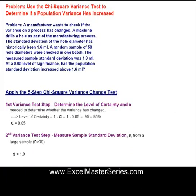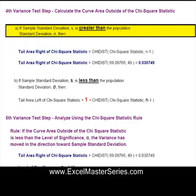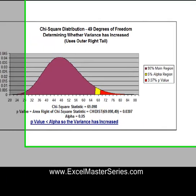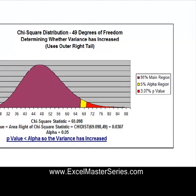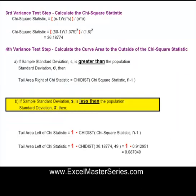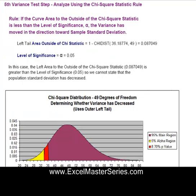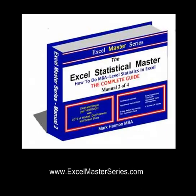There are a couple of problems in this chapter, each using the five-step process. We walk you through that with a graph at the end of each problem. Everything's explained simply, step-by-step, with no guessing about which theory to apply. You only need a basic knowledge of Excel to make it through this manual.